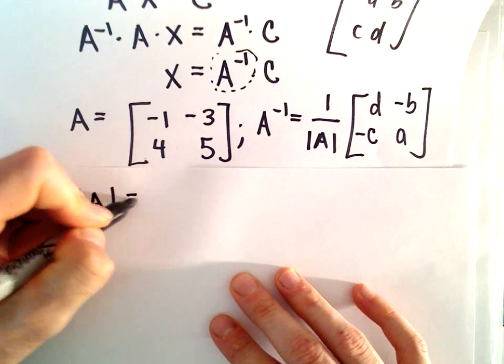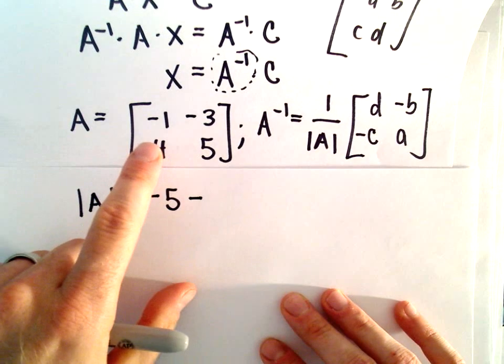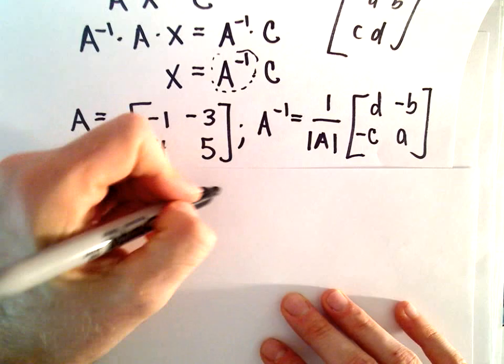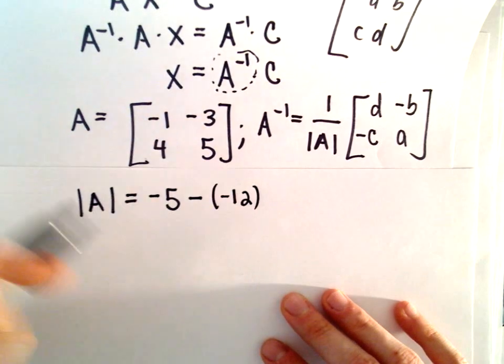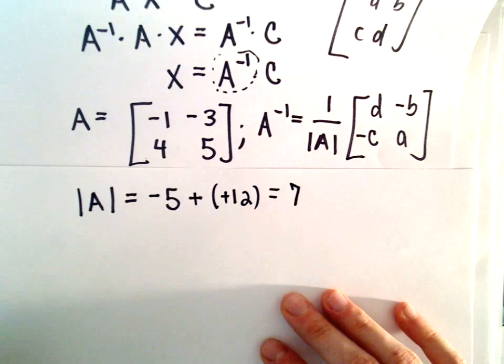So to get the determinant, we'll take negative 1 times 5, which will be negative 5, and then we'll subtract the product of 4 times negative 3, which will be negative 12. So we've got negative 5 plus 12, which is going to give us positive 7.